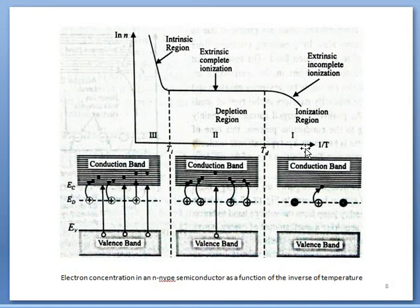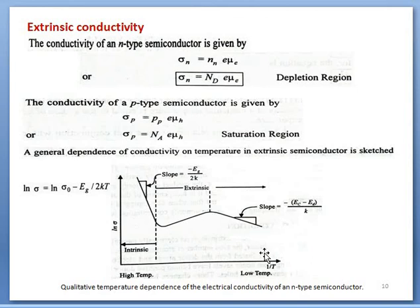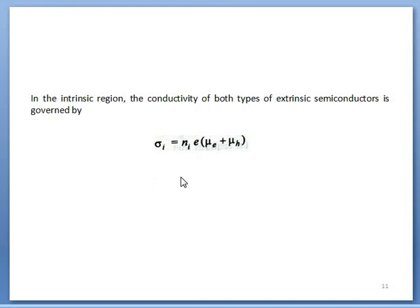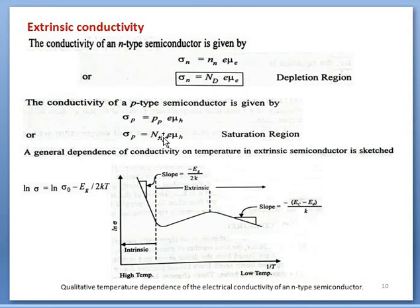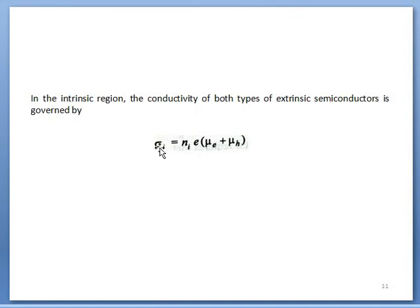In the intrinsic region, conductivity converts into intrinsic conductivity, and Nd and Na become equal to Ni. We have Ni·e·μH and Ni·e·μE. Taking NiE common, we have the final equation representing the conductivity of an intrinsic semiconductor. That's all in this lecture. Thank you.